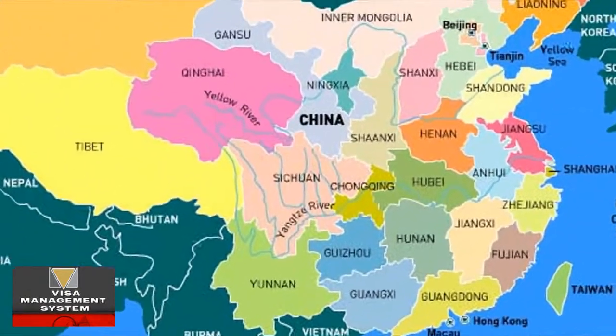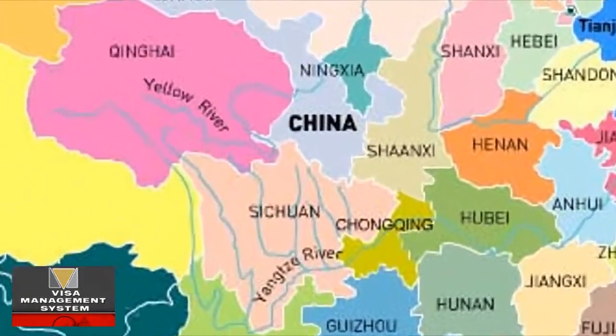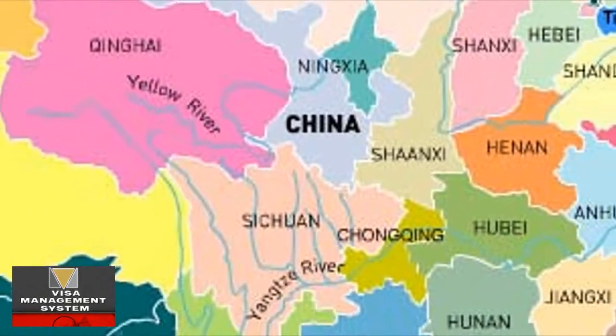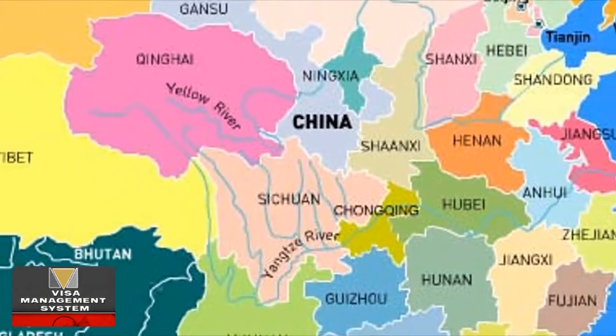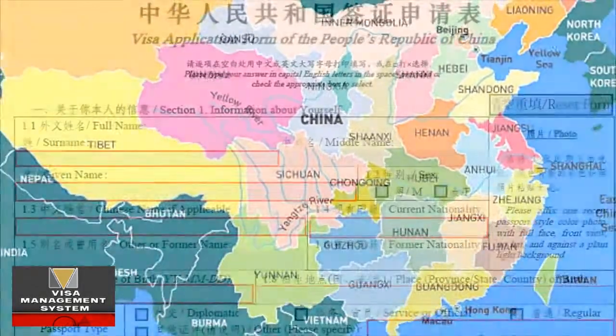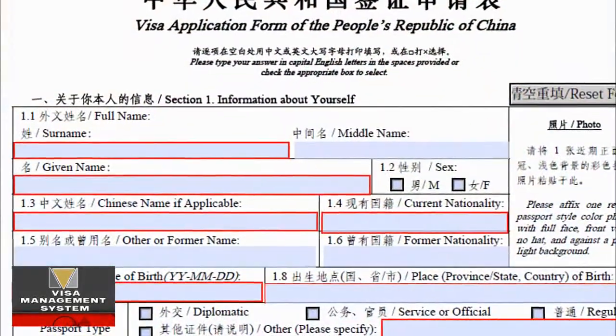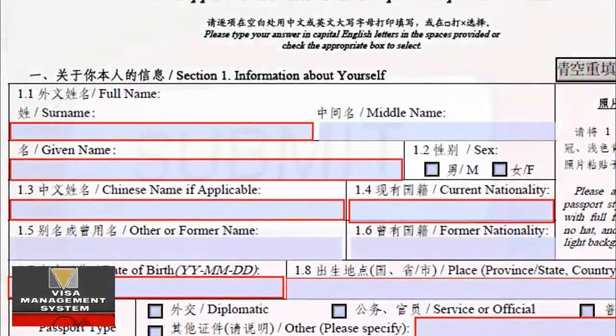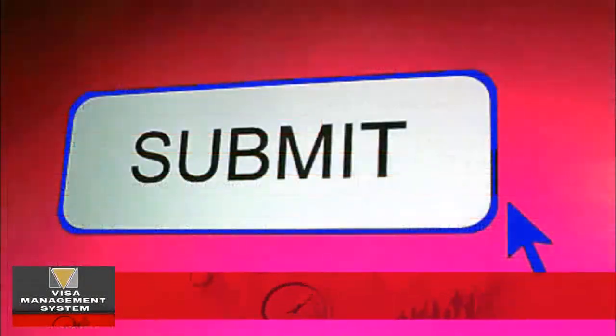When he applies again for China, the travel agent can simply click on the profile of the user and China, and the form for China gets filled up, and they can print it and submit it.